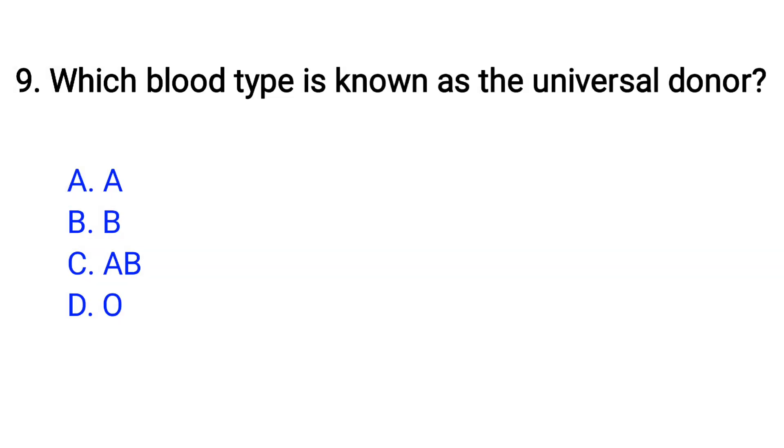Question number 9. Which blood type is known as the universal donor? Option A: A, B: B, C: AB, D: O. The right answer is option D, O.